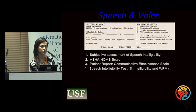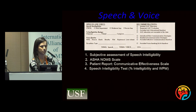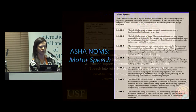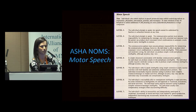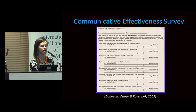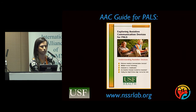For speech and voice, we do a subjective assessment of speech intelligibility, use the ASHA National Outcomes Measurement scale, a patient report of communicative effectiveness that's been validated, and the Speech Intelligibility Test. We also do education on effective communication strategies, voice banking, and AAC, with patient handouts and referral to voice banking clinics or an AAC evaluation. The Communicative Effectiveness Survey, published by Neil O'Donovan in 2007, has scores ranging from 8 to 32 and assesses perceived ability to communicate across different environments. These guides are free to download from our lab website — about a 12-page pamphlet current for the United States.